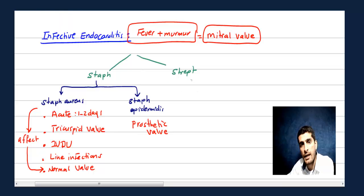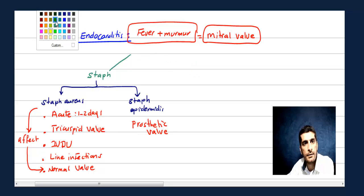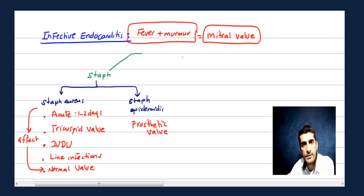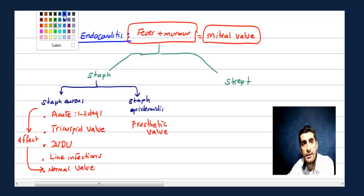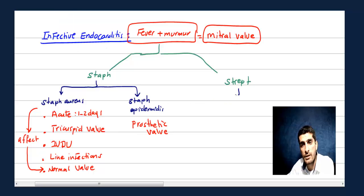You can also divide Strep into two types. First, Streptococcus viridans — the most common cause of endocarditis overall — but this is usually subacute endocarditis. With Strep viridans, the patient's valve is abnormal to start with — for example, mitral valve prolapse or mitral valve stenosis — and then the patient has dental procedures, after which the valve becomes infected.